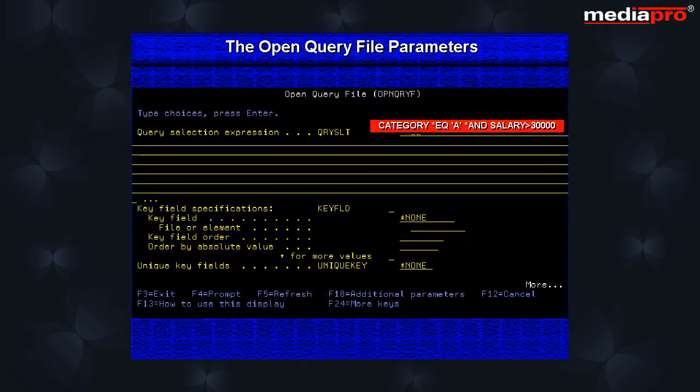Let us look at an example. Here we are selecting those records where the category field is equal to A and the salary is greater than 30,000.